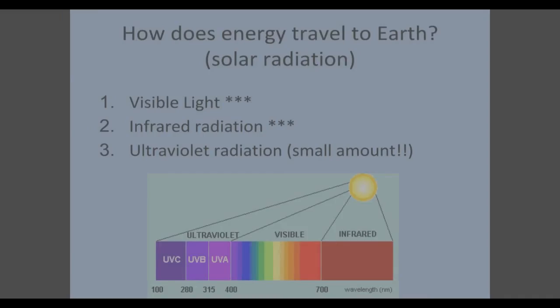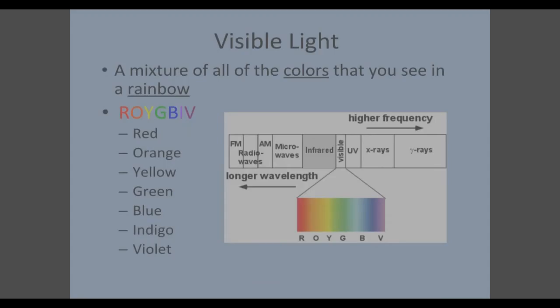Solar energy travels to Earth three ways. The first is visible light. The second is infrared radiation. And the third is ultraviolet radiation, but just a small amount. What I'd like you to do is take a second and star visible and infrared, because most of the energy that travels to the Earth comes from these two sources. Now we're going to take a second and talk about each of these quickly. Visible light is a mixture of all the colors that you see in the rainbow. So that's our ROY-GBIV. The light spectrum is organized from shorter to longer. Red and orange are our longest, and blue and violet are our shortest waves.